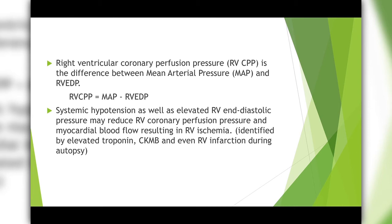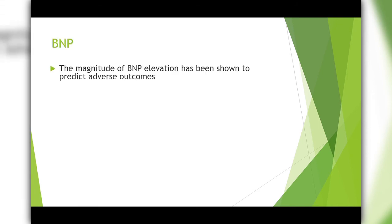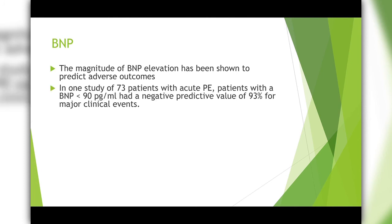Reduced myocardial blood flow results in RV ischemia, which is identified by elevated troponin, CKMB, and even RV infarction during autopsy. Regarding BNP, the magnitude of BNP elevation has been shown to predict adverse outcomes — the higher the BNP, the higher the adverse outcomes. This is based on a study showing a negative predictive value of 93% for major clinical events.